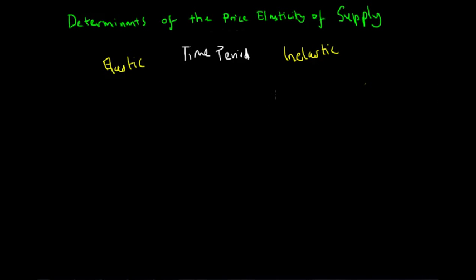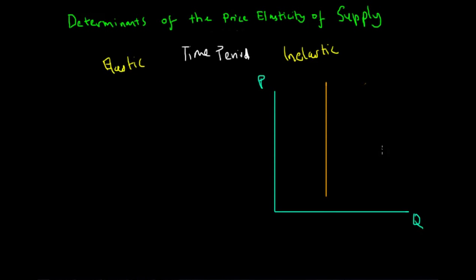In the short term, with price on the y-axis and quantity on the x-axis, because resources can't be mobilized, we have a relatively inelastic supply curve — or in extreme cases a perfectly inelastic supply curve. In both cases, over only a short period of time, producers won't be able to change their quantity supplied significantly because of resource constraints.